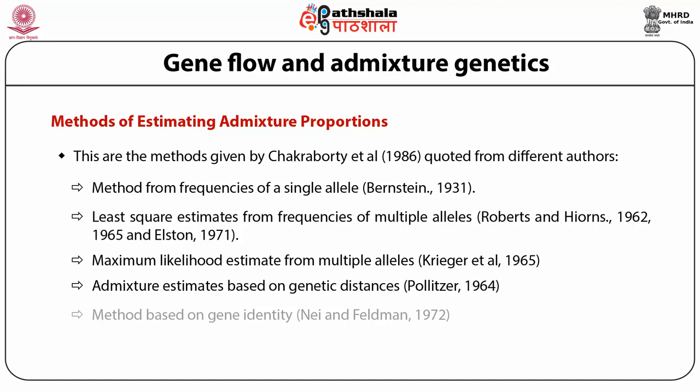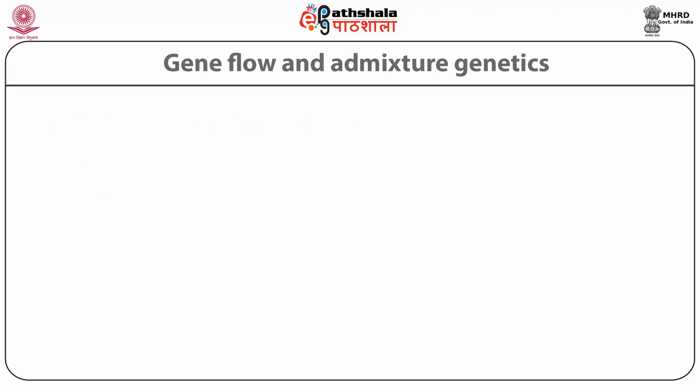The last method is the method based on genetic identity. The problem with admixture estimates based on genetic distance can be circumvented if one considers a suitable measure of genetic similarity instead. If genetic similarity is defined by gene identity — that is, the probability that two genes chosen at random from one or more populations are identical — it can be expressed as a linear function of admixture proportions.